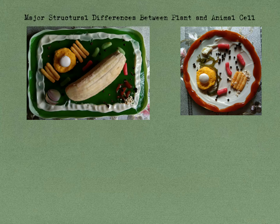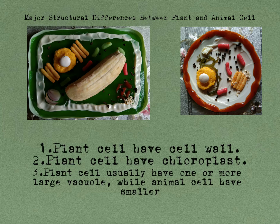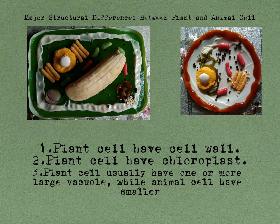Major structural differences between a plant and an animal cell: Plant cells have a cell wall, but animal cells do not. Plant cells have chloroplasts, but animal cells do not. Plant cells usually have one or more large vacuoles, while animal cells have smaller vacuoles if they are present. Large vacuoles help provide shape and allow the plants to store water and food for future use.